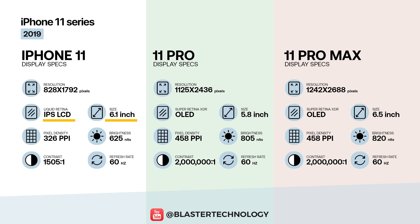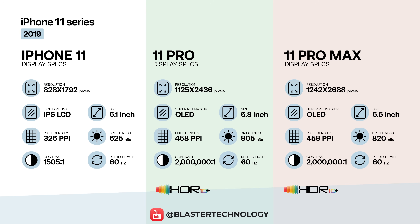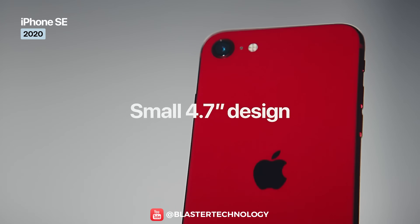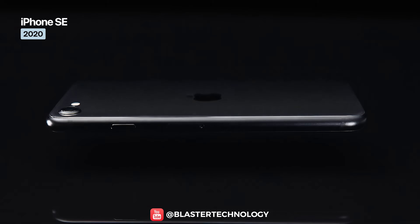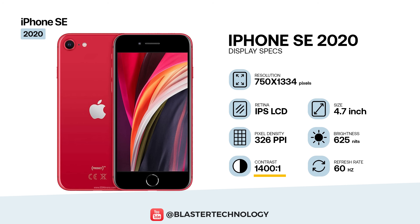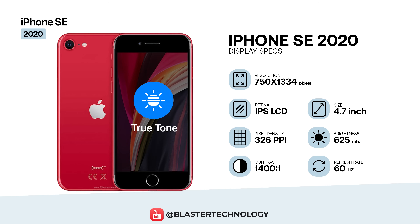The iPhone 11 keeps its 6.1-inch LCD, while the Pro models use Super Retina XDR OLED panels at 5.8 and 6.5 inches, both with 458 ppi. Key features include a practically infinite contrast ratio, support for HDR10 and Dolby Vision, up to 1200 nits of HDR brightness, and a typical brightness of 800 nits. The iPhone SE uses the same display panel found in the iPhone 6, 7, and 8, with a contrast ratio of about 1400 to 1, a typical brightness of 625 nits, and True Tone.